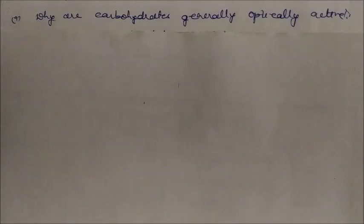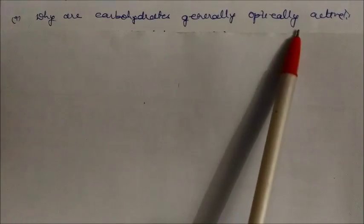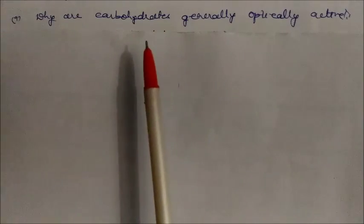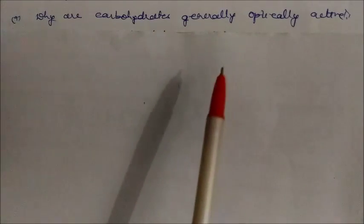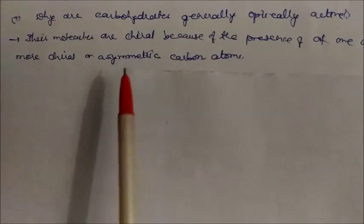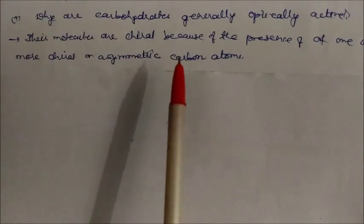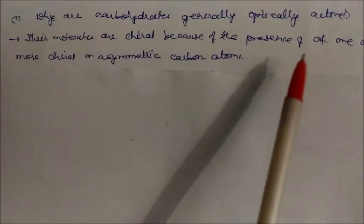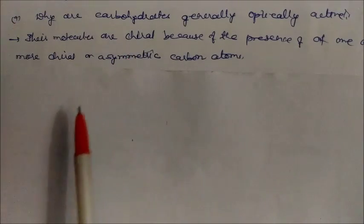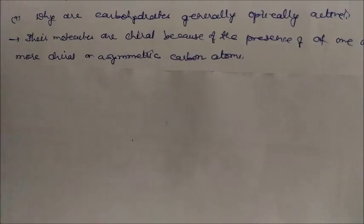Why are carbohydrates generally optically active? Because their molecules are chiral, due to the presence of one or more chiral (asymmetric) carbon atoms. This chirality makes carbohydrates generally optically active.